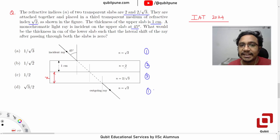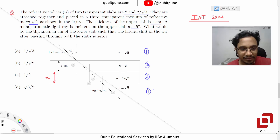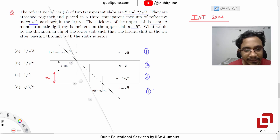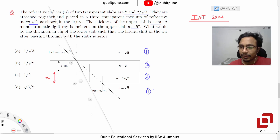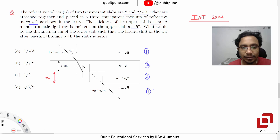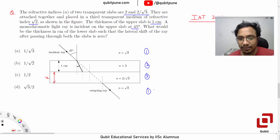Now observe: root 2 is less than 2, which means this ray when it enters the slab for the first time it is going to bend towards the normal. So let us now draw a normal here. Can we find the angle of refraction? For that we need to know the relative refractive index of medium 2 with respect to medium 1.